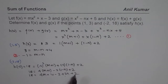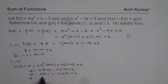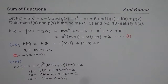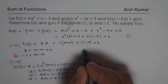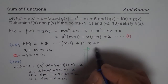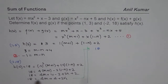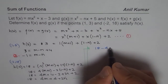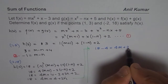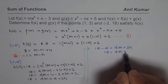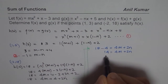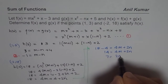Combining the constants: 4 minus 2 plus 2 equals 4. So we have 18 equals 4m plus 2n plus 4. Taking 4 to the left side: 18 minus 4 equals 14, so 14 equals 4m plus 2n. Dividing by 2 we get 7 equals 2m plus n. Let us call this equation 3.